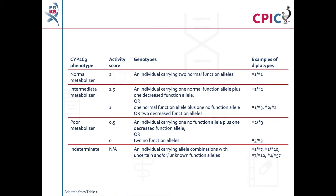There are over 70 defined CYP2C9 alleles, known as star alleles. Star alleles are assigned an activity value relative to the star 1 allele, which is designated as a normal function allele with an activity value of 1. The activity values of a patient's CYP2C9 star alleles can be combined to make a total CYP2C9 activity score. This activity score is then used to assign a metabolizer phenotype to the patient, as shown in this table and in Table 1 of the guideline.